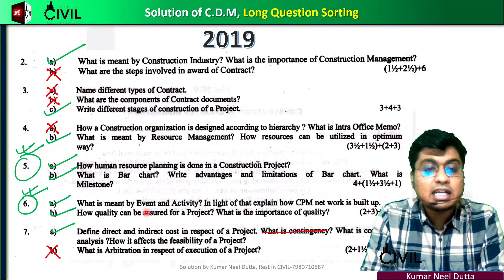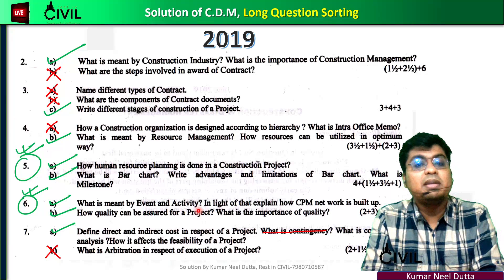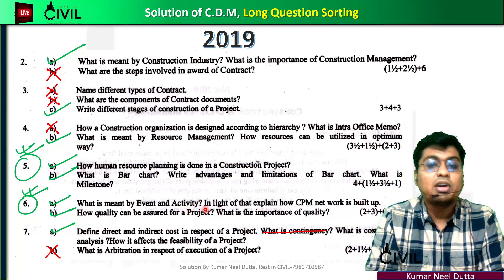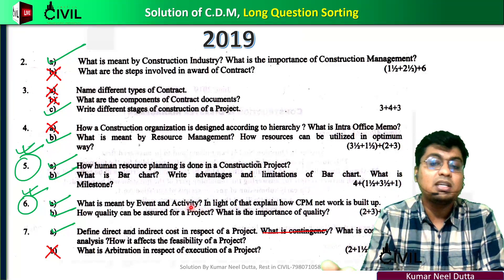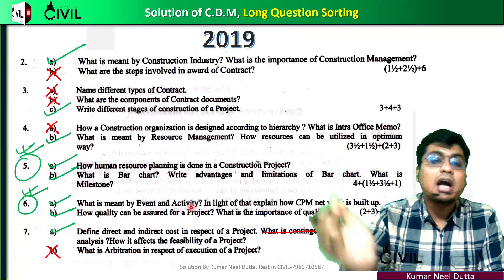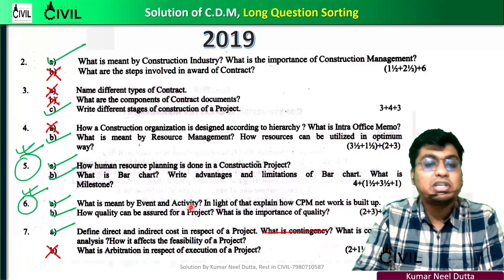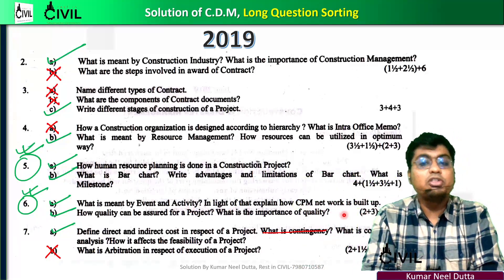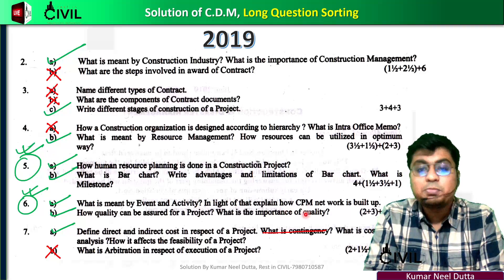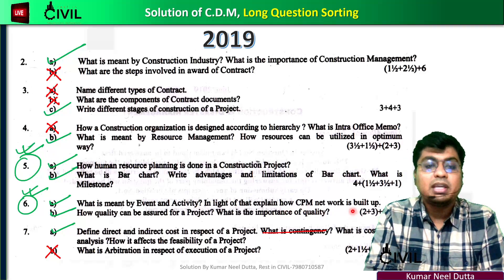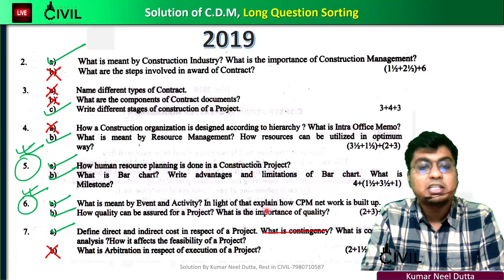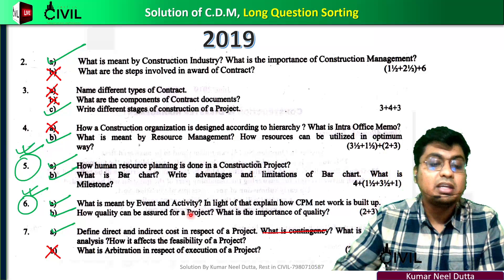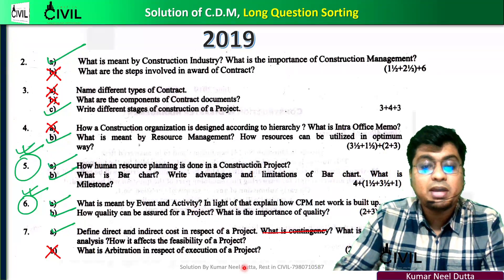Like this, you have PERT/CPM — you have to look at event and activity. What is meant by event and activity? What is meant by activity? If there is activity that will change, what is meant by event? Explain CPM, how quality, how quality or safety. This is the chapter of quality and safety.